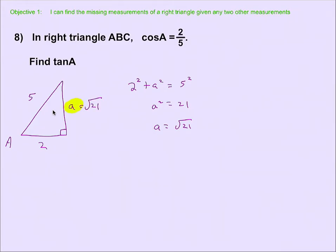And this way I'm not rounding, I'm using the exact number, and so the tangent of angle A, just using the definition of tangent, is the ratio of the opposite leg over the adjacent leg, and that would be your final answer.